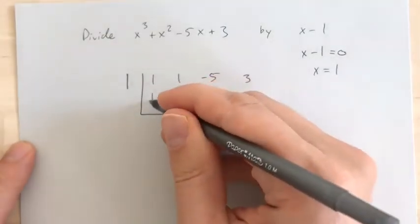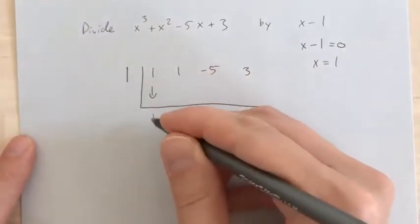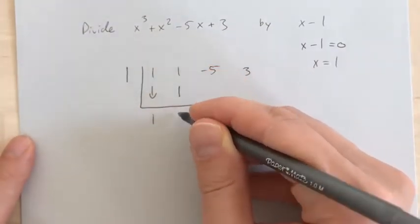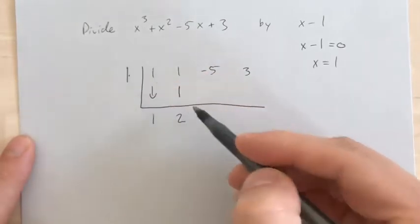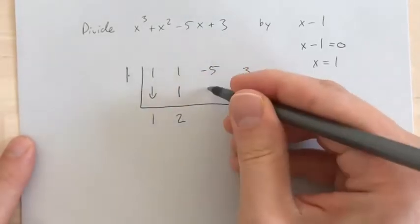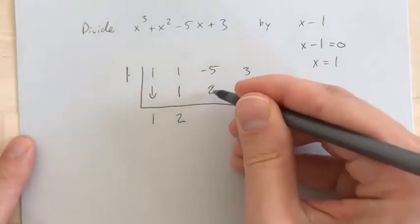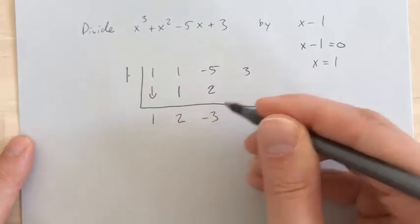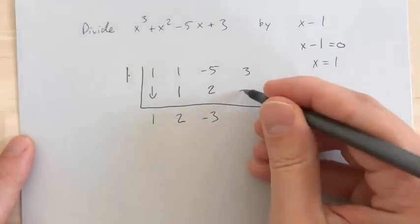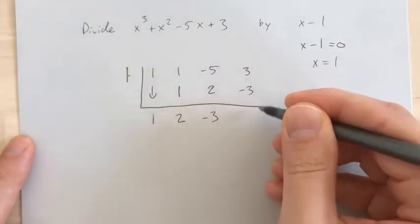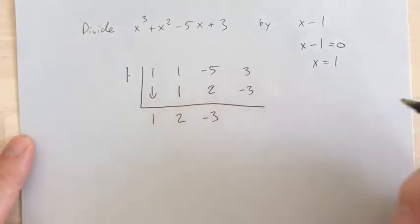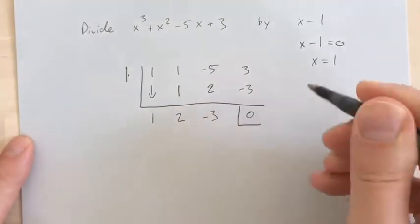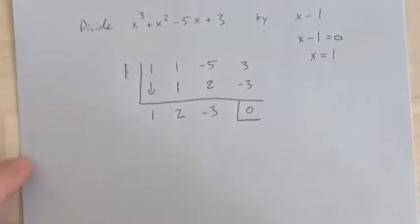Drop down this first guy, get 1. 1 times 1 is 1. 1 plus 1 would get 2. 1 times 2 is 2. Negative 5 plus 2 is going to give me negative 3. And then 1 times negative 3, we get negative 3. 3 plus negative 3 gives me 0. So here is my remainder — it is 0.